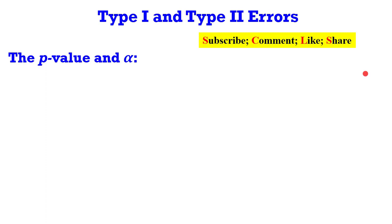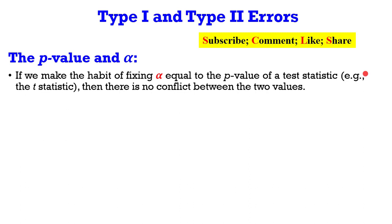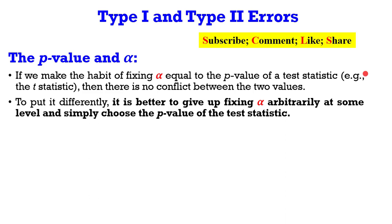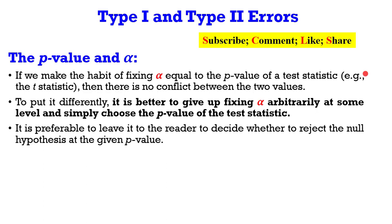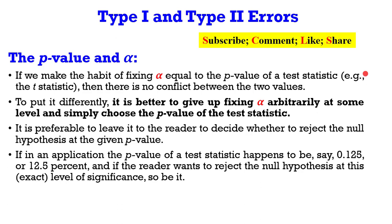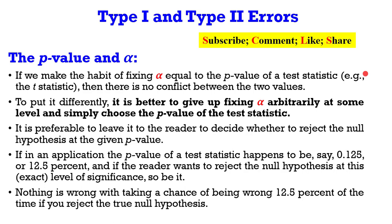Let's look at the p-value and its relationship with alpha. If we make the habit of fixing alpha to be equal to the p-value of any given test statistic, there is no conflict between the two values. It is better to give up fixing alpha arbitrarily and simply use the p-value for the test statistic, leaving it to the reader to decide whether to reject the null hypothesis at that given p-value. If the p-value happens to be 0.125 — 12.5% — and a reader decides to reject the null at that level, there is nothing wrong with taking a chance of being wrong 12.5% of the time.